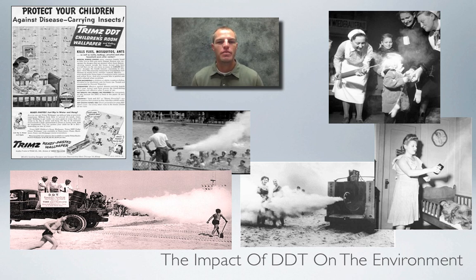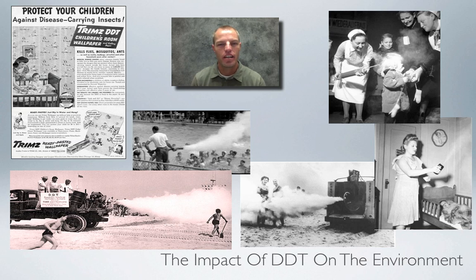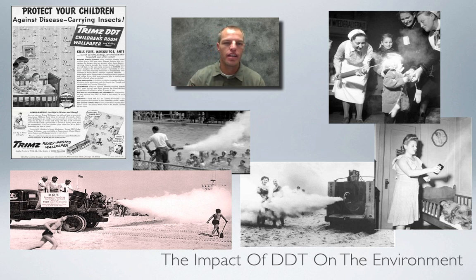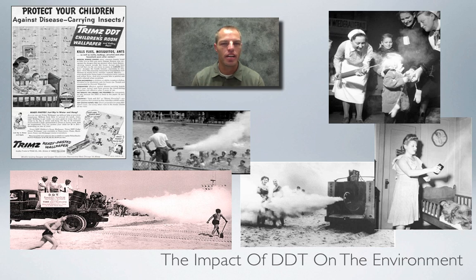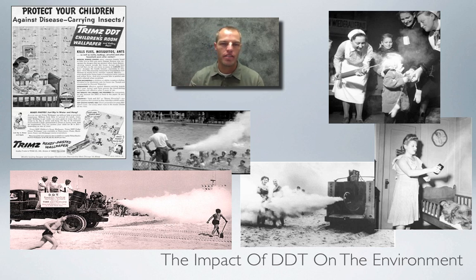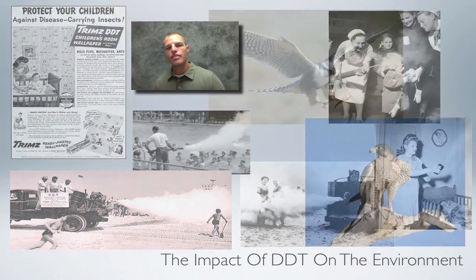A 2005 study found DDT in the blood of almost 98–99% of people tested. Many people alive today likely still have DDT in their blood. As for environmental impact, falcon populations in the 1950s and 60s dropped drastically when DDT was heavily used as a farming product. Scientists believed DDT thinned eggshells, making it hard for falcons to reproduce.